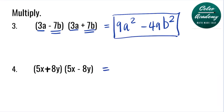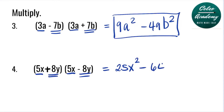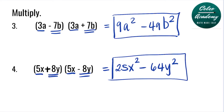Question number 4: (5x + 8y) times (5x − 8y). This is also a product of sum and difference. Step 1 is to multiply the first terms — 5x times 5x is 25x squared. Then multiply the second terms 8y and negative 8y, that's minus 64y squared. So the answer for number 4 is 25x squared minus 64y squared.